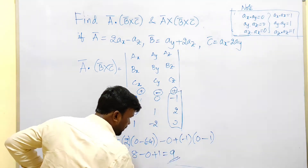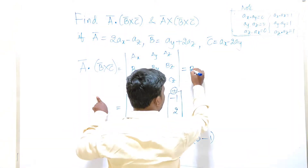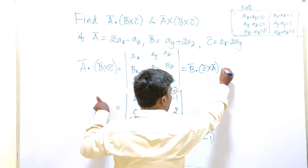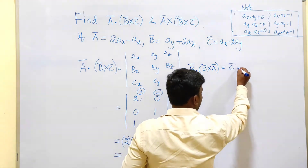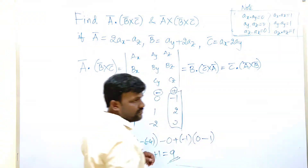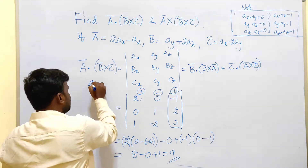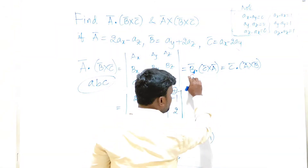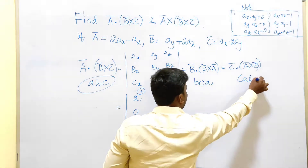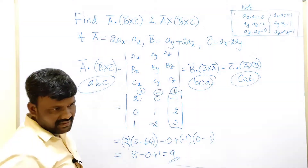Simplifying: 8 − 0 + 1 = 9. So a bar dot (b bar cross c bar) = 9. This scalar triple product is equivalent to b bar dot (c bar cross a bar), or c bar dot (a bar cross b bar). You can remember the cyclic order as abc → bca → cab.